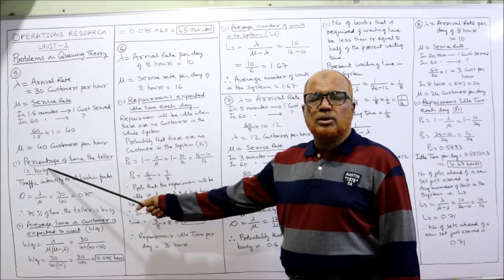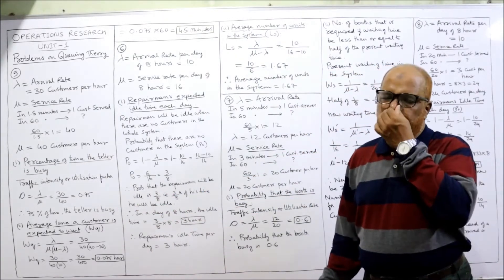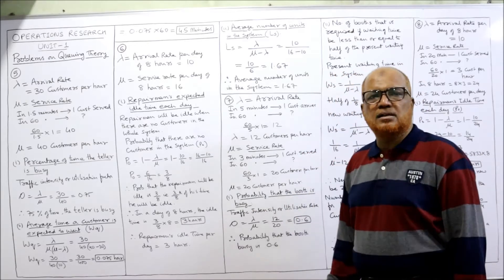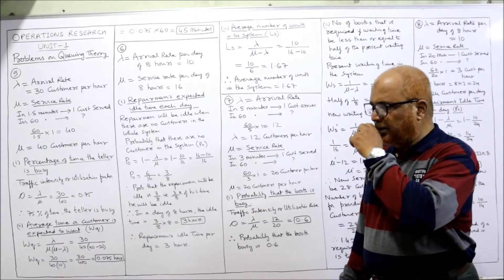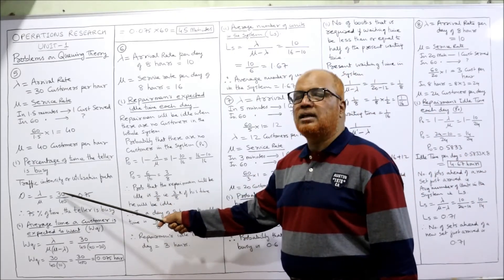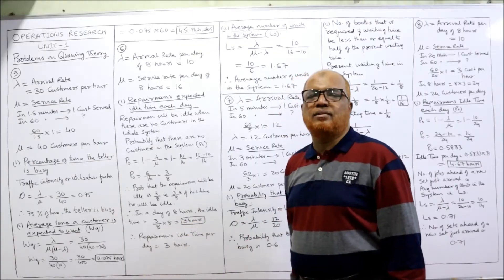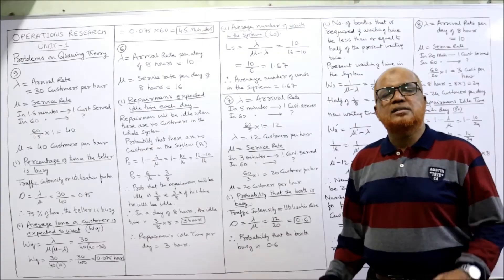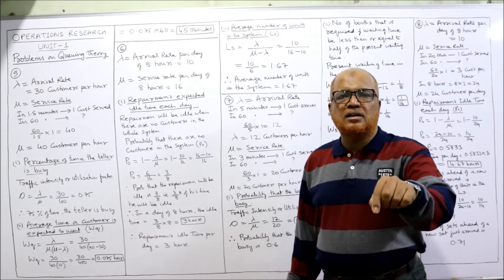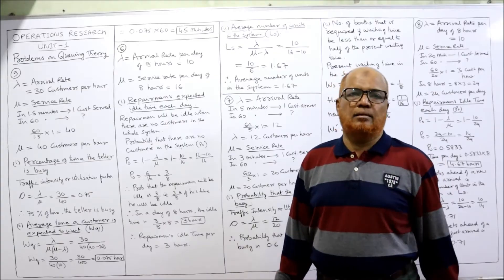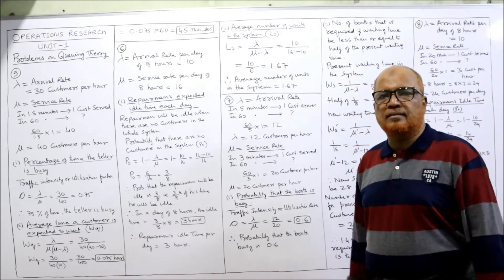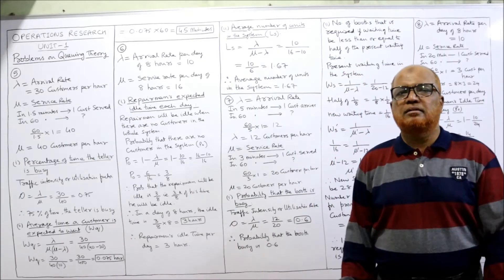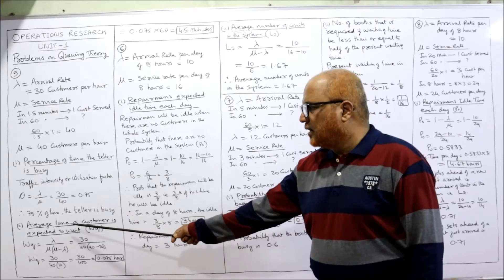First question: percentage of time the teller is busy — that is the utilization factor or traffic intensity. The formula is Rho = lambda by mu = 30 by 40 = 0.75. So 75 percent of the time the server is busy, and 25 percent of the time the server is idle. The answer to the first question: the teller is busy 75 percent of the time.